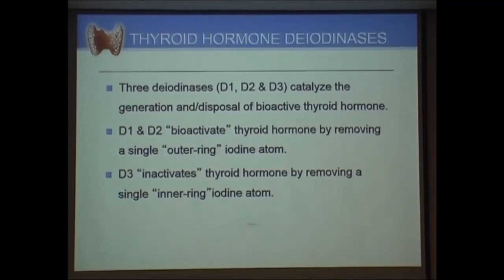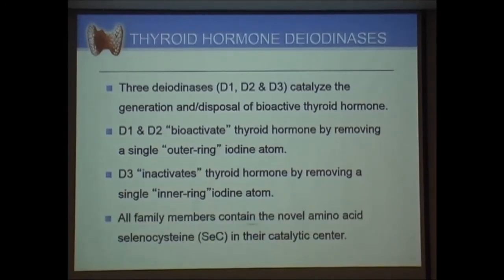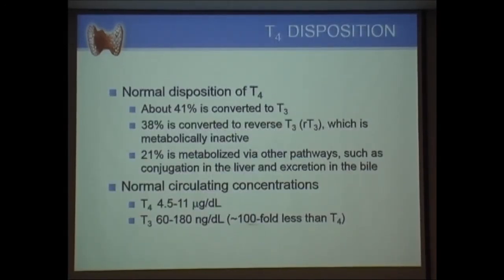D3 deiodinase is often present in the placenta during pregnancy, which is one reason why there is an extra requirement and a state of relative hypothyroidism in pregnancy. People who are borderline hypothyroid can suddenly become overtly hypothyroid when pregnant, due to increased destruction of T4 by type 3 deiodinase in the placenta. Additionally, T4 can be converted not only to T3 but also to something called reverse T3.